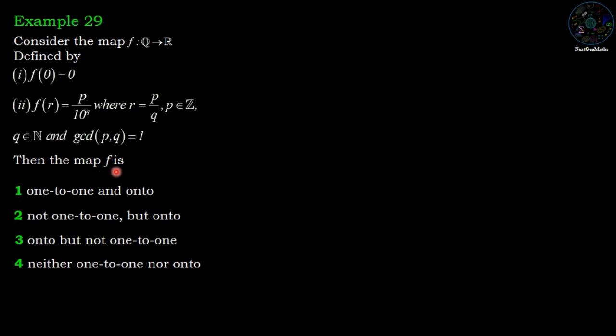Then the map F is: option 1, one-to-one and onto; option 2, not one-to-one but onto; option 3, onto but not one-to-one; and option 4, neither one-to-one nor onto.